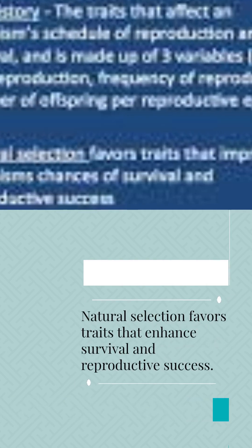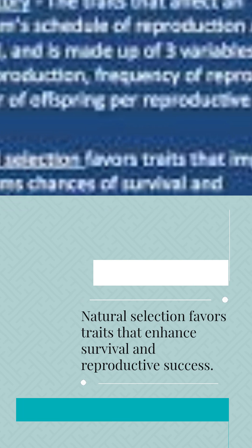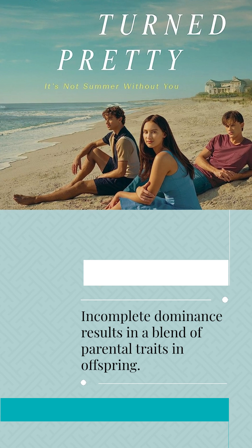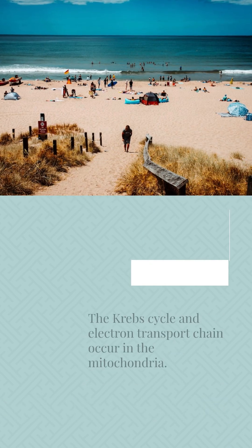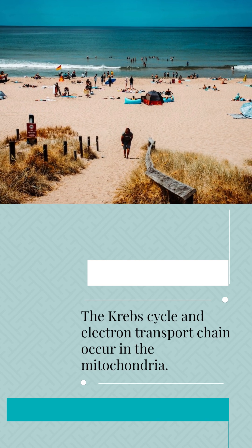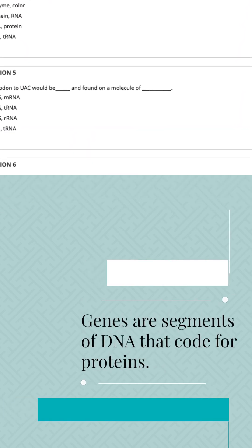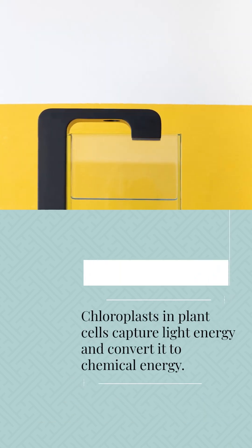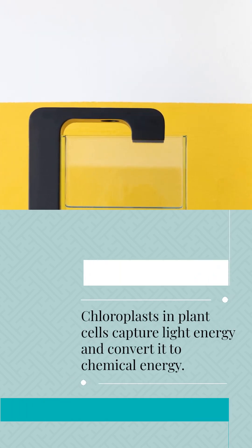Natural selection favors traits that enhance survival and reproductive success. Incomplete dominance results in a blend of parental traits in offspring. The Krebs cycle and electron transport chain occur in the mitochondria. Genes are segments of DNA that code for proteins.